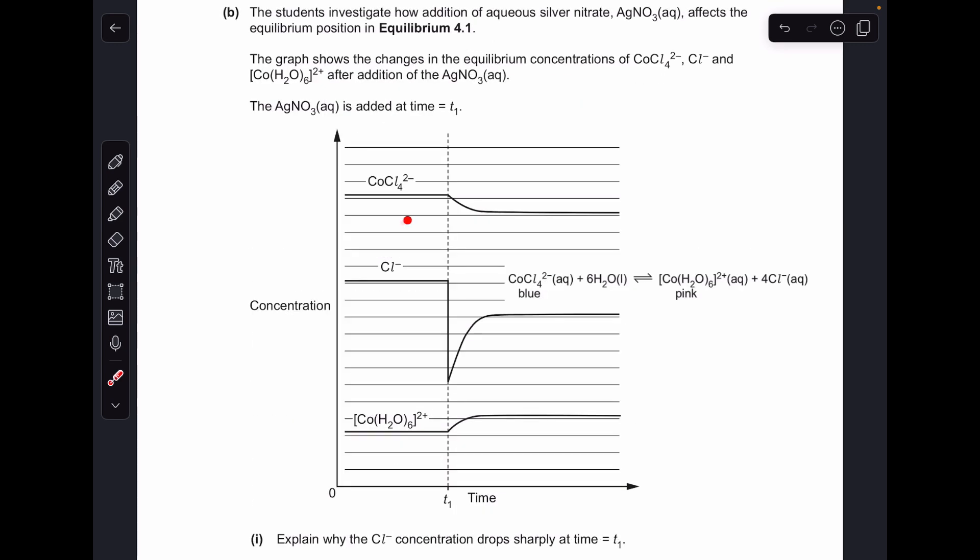Moving on to part B, so we've got this sort of quite unusual graph here and obviously all linked to the equilibrium from before. First thing I'm going to talk about is why does the chloride concentration drop sharply at T1? So you can see the graph plummets at T1.